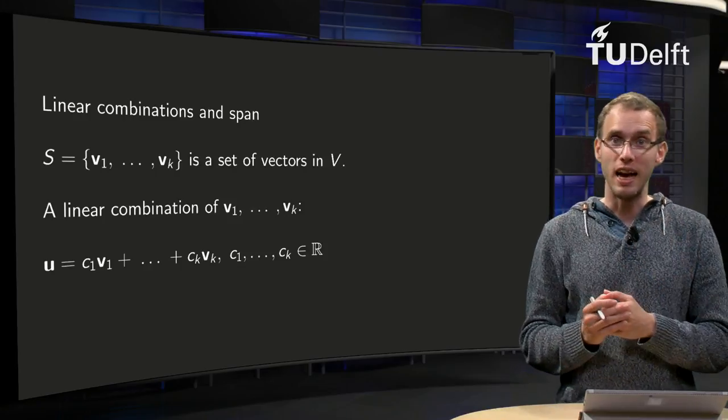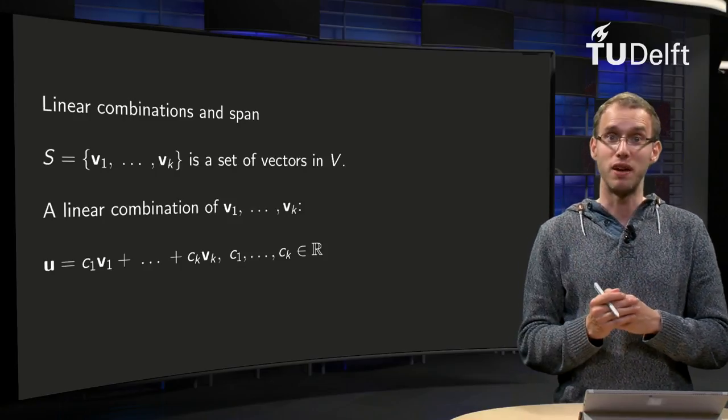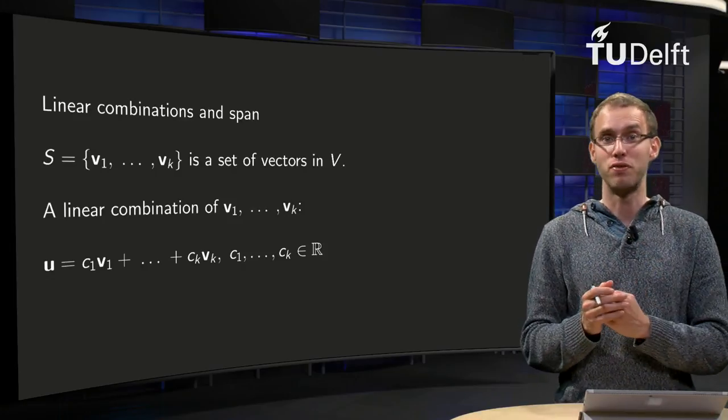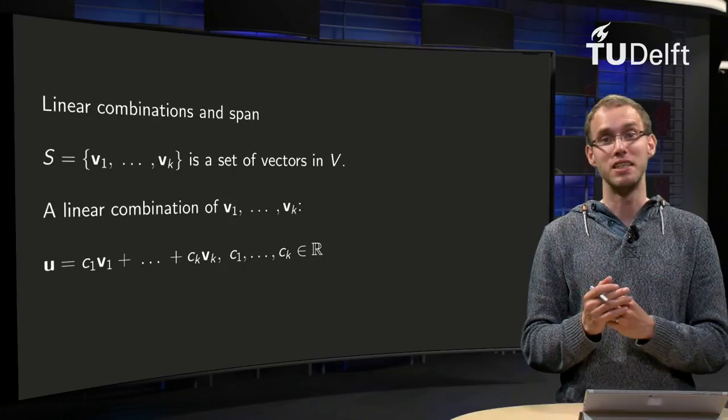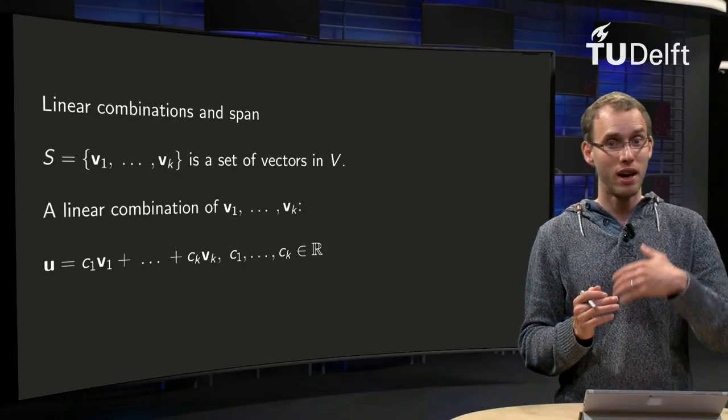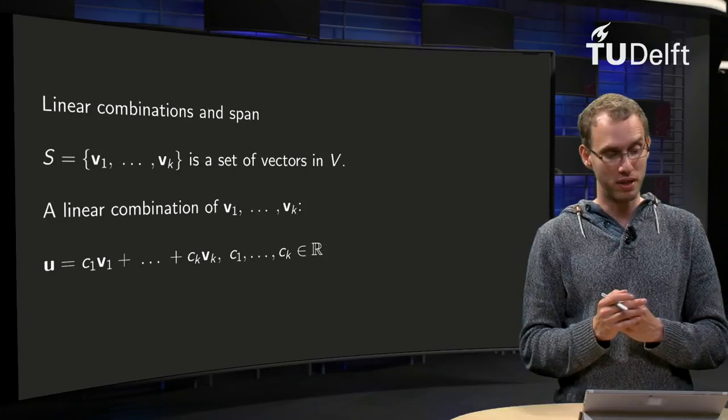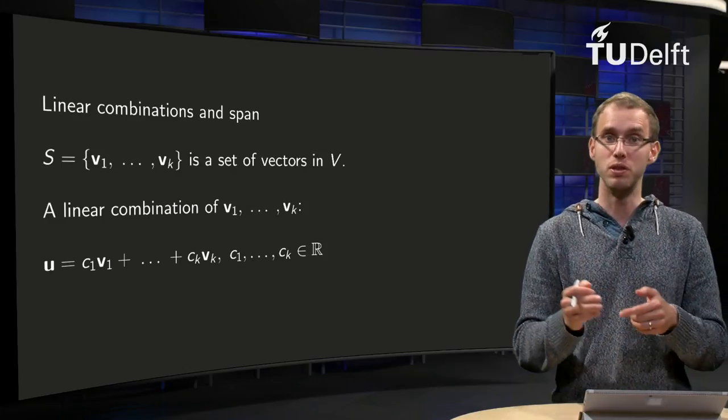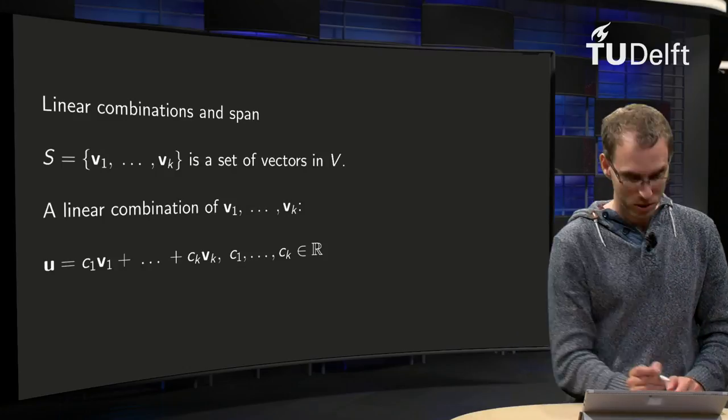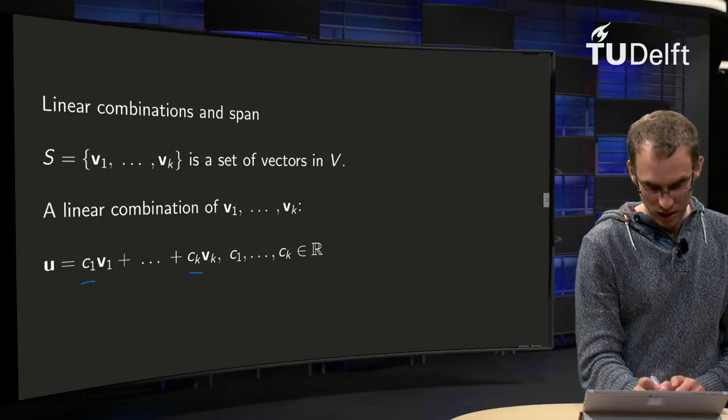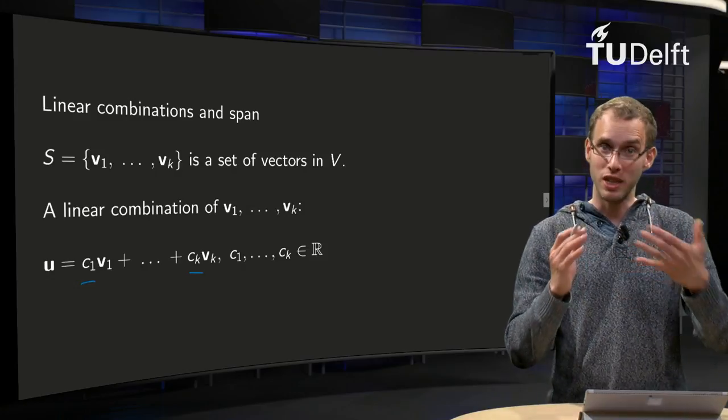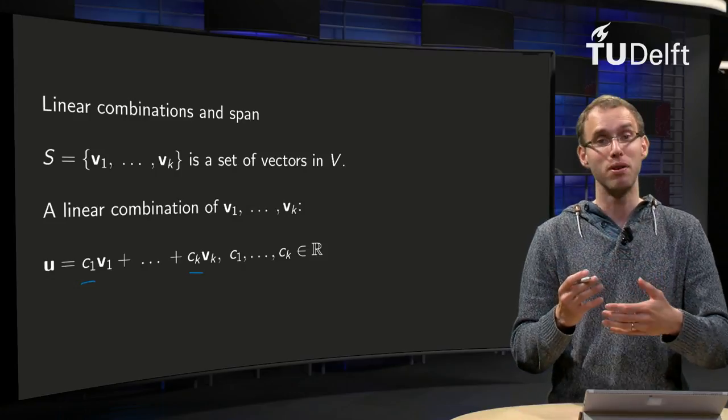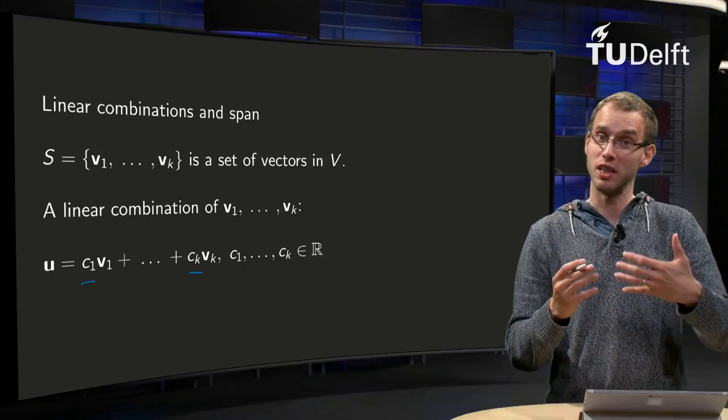Suppose we have a set S of V1 up to Vk, a set of vectors in V, which can be any vector space. The linear combination of those vectors is defined in exactly the same way as we define linear combinations of vectors in R^n. A linear combination of V1 up to Vk is a vector u of the form C1V1 plus C2V2 plus up to CkVk, where C1, etc., are just weights—scalars, numbers in R. So the idea of a linear combination is exactly the same as a linear combination of vectors in R^n.